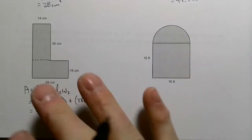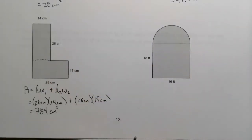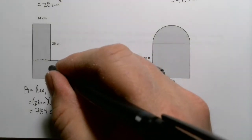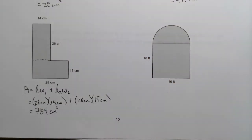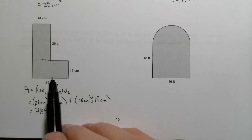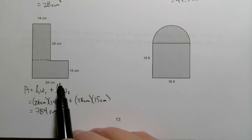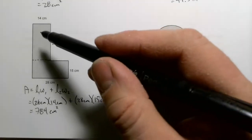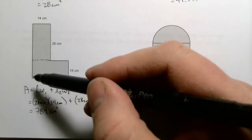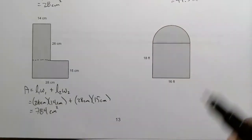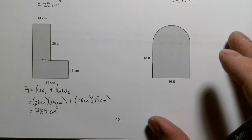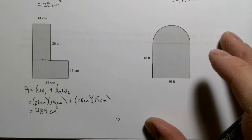That's not the only way I could have broken that shape up — I could have dropped a line down instead. I would then need to figure out the missing dimensions, but that's achievable and wouldn't take too long.